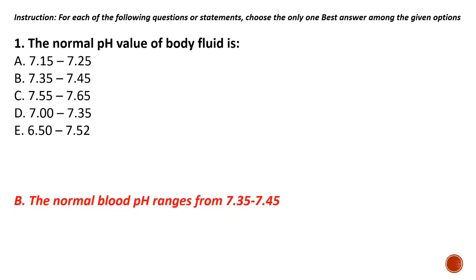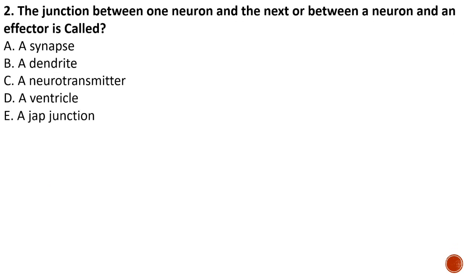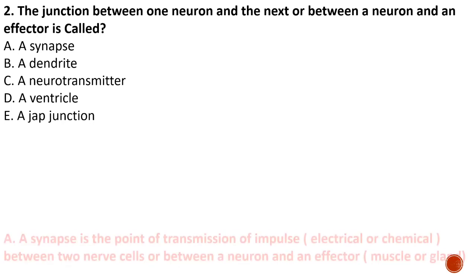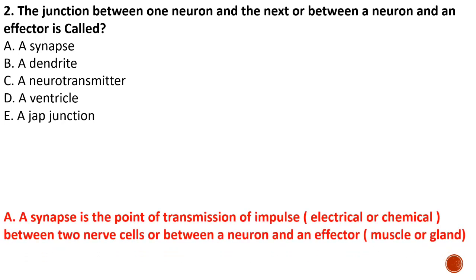Question number two: the junction between one neuron and the next, or between a neuron and its effector, is called — options are: A) a synapse, B) a dendrite, C) a neurotransmitter, D) a ventricle, E) a gap junction. The correct answer is A — a synapse — because the synapse is the point of transmission of impulse between two nerve cells or between a neuron and an effector, which could be a muscle or a gland.